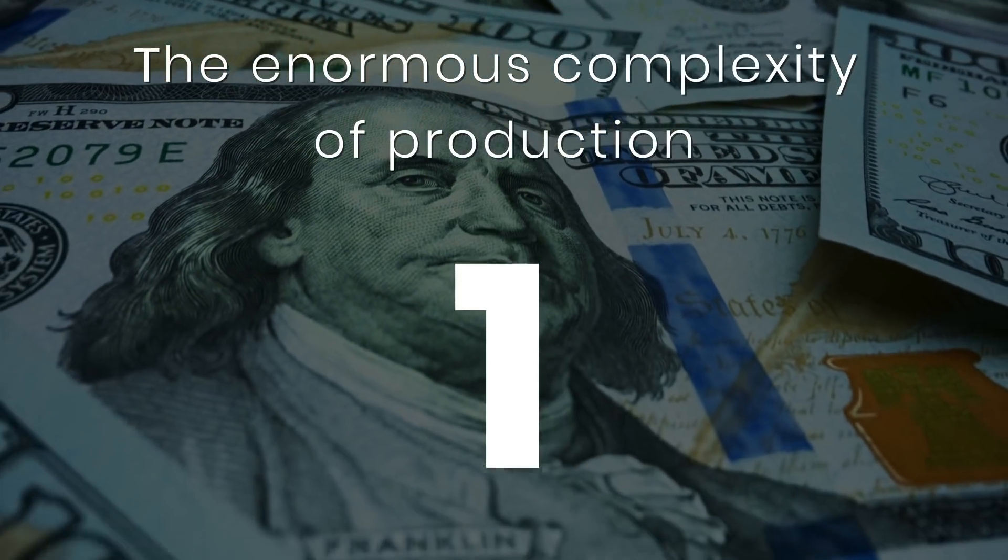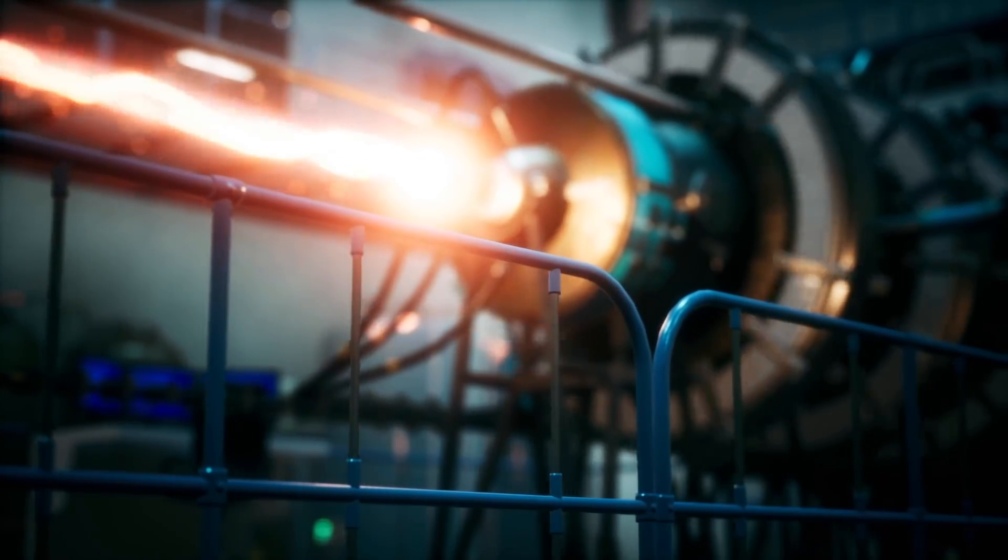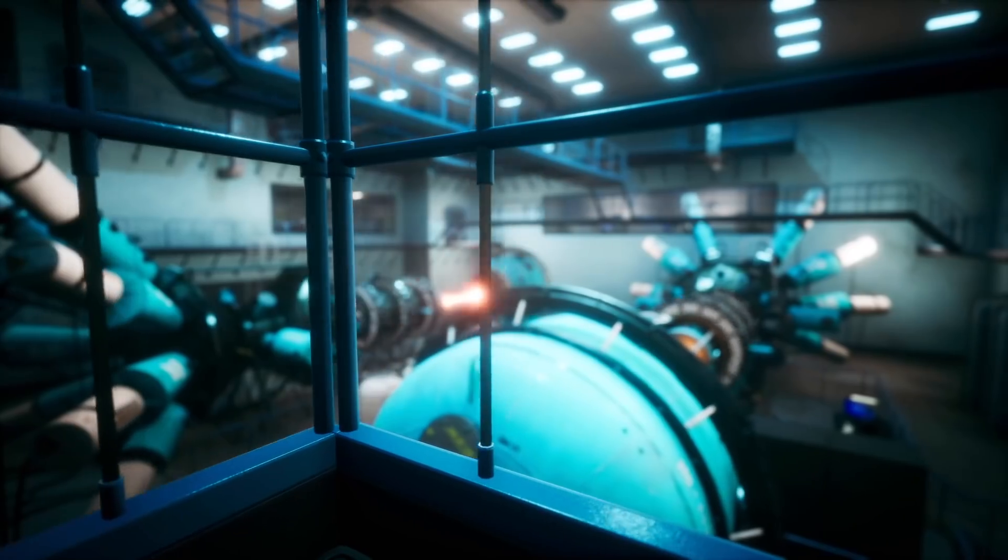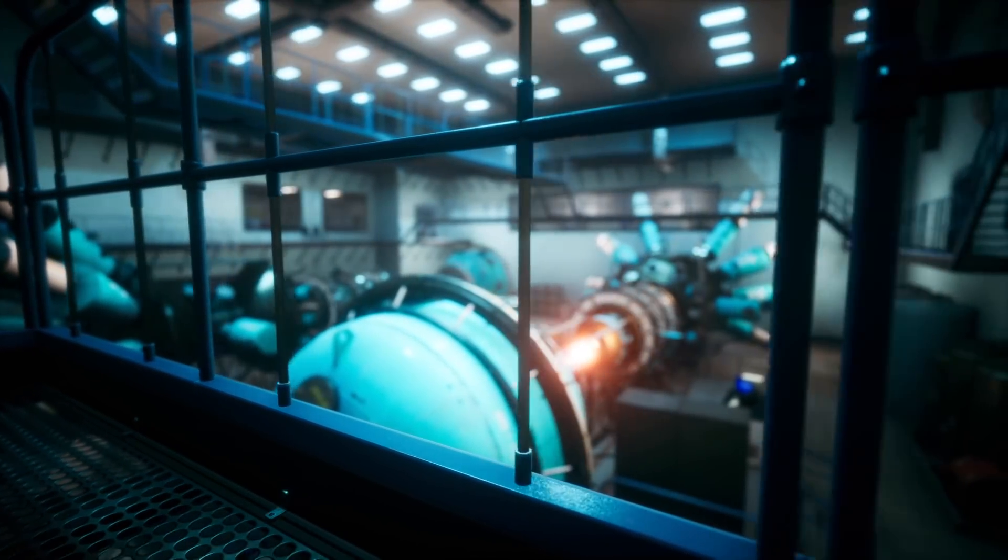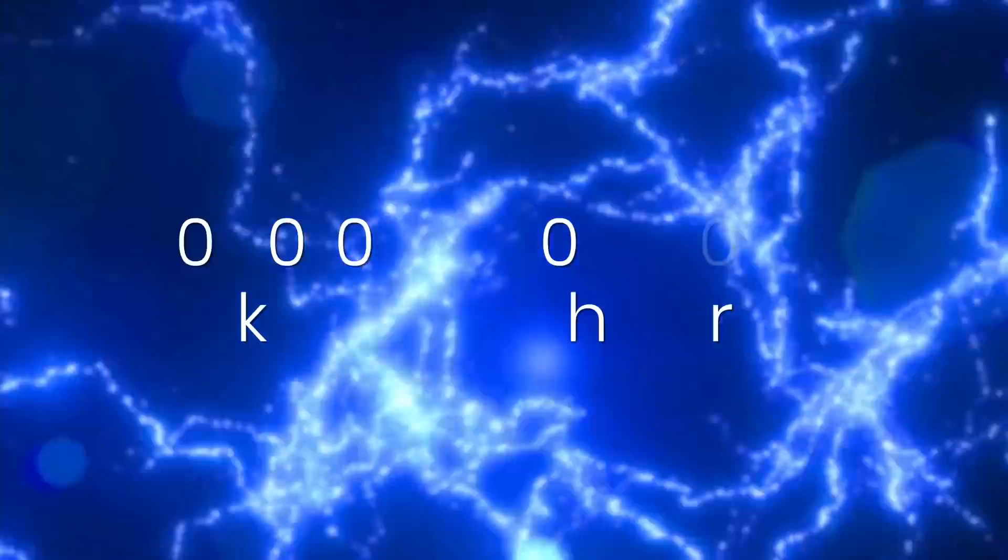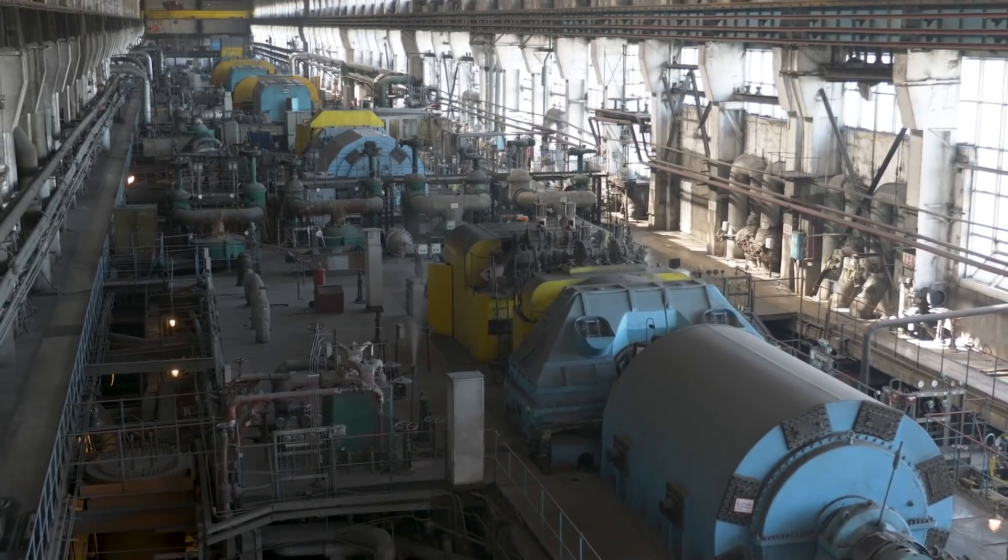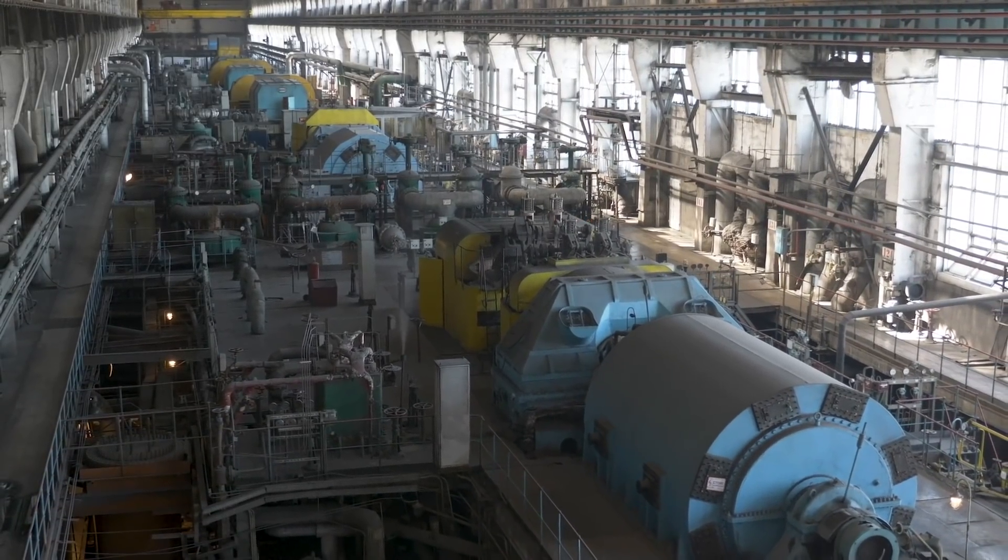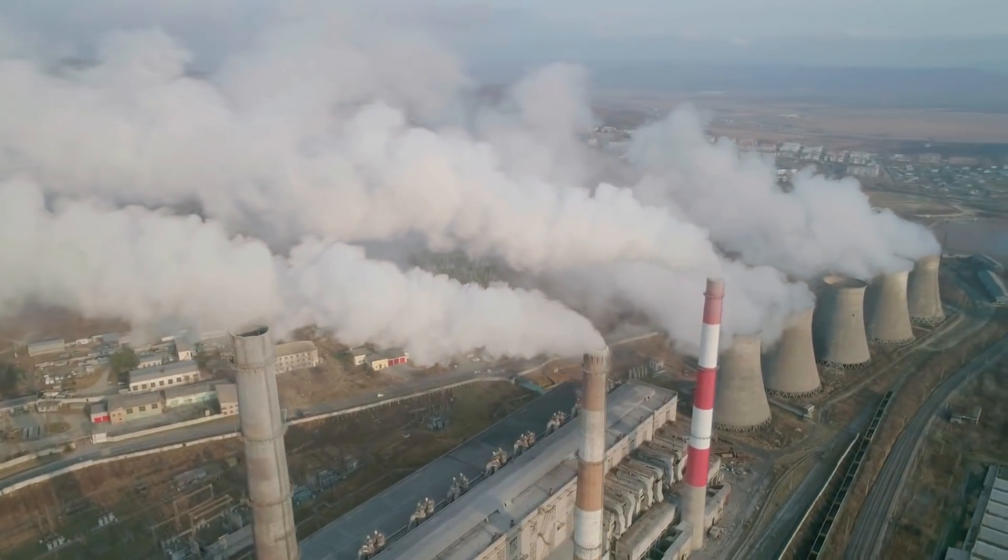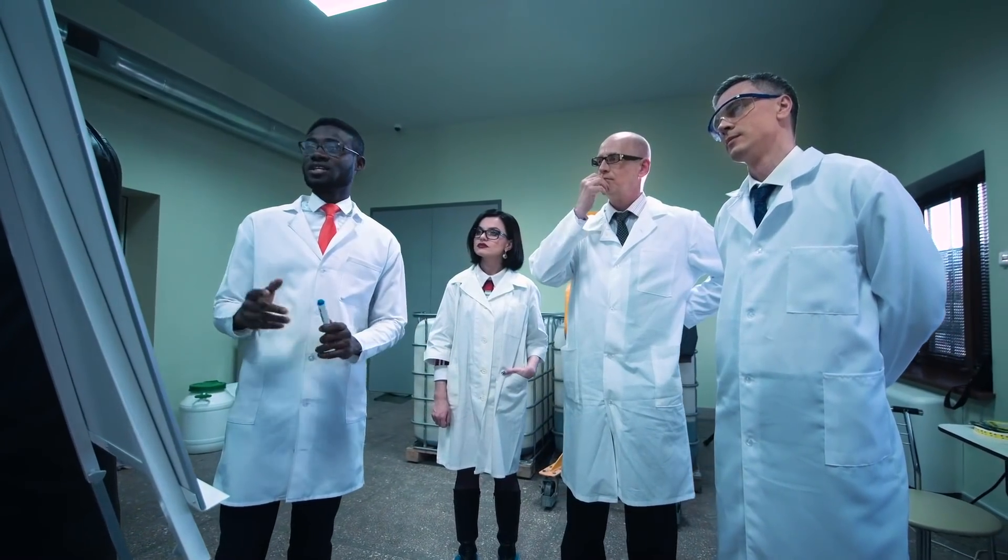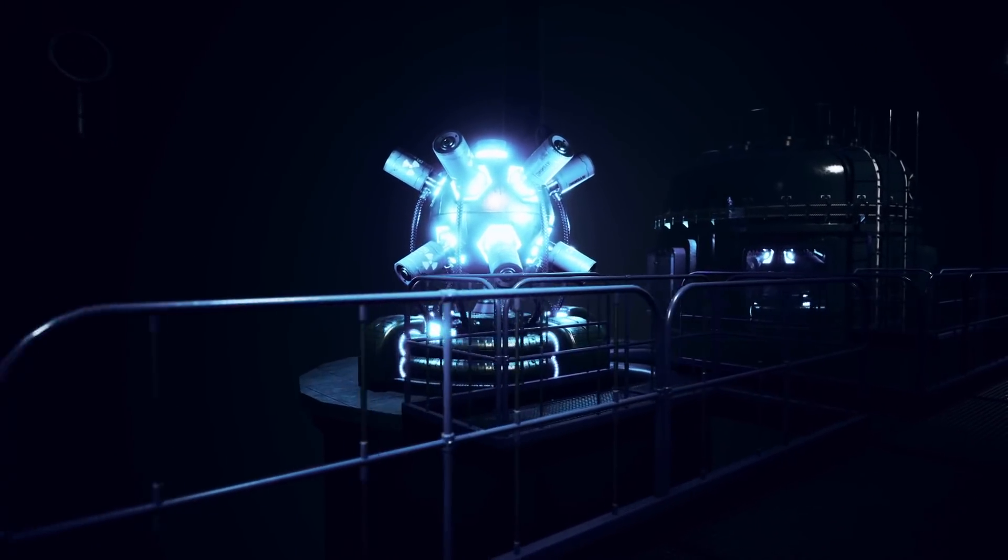First, the enormous complexity of production. To extract such material, very precise and energy-intensive technologies are needed. To create one gram of antimatter, it would take a whole year to use all the electricity generated on the planet. And this is approximately 25 million billion kilowatt hours of energy. To date, the inefficiency in the production of antimatter is enormous. Given the costs of obtaining antimatter, only a tenth of a billion of invested energy can be returned. If scientists could collect all the antimatter we've ever produced and destroy it, the energy produced would not even be enough to boil a cup of tea.